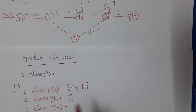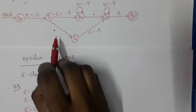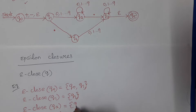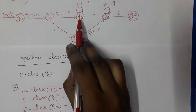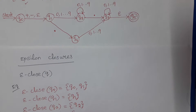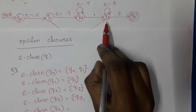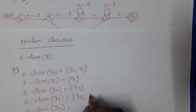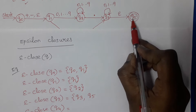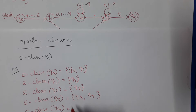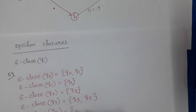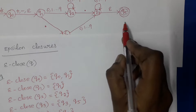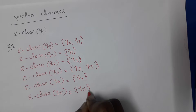E-close of q1: first write q1, then check for epsilon transitions from q1 — there are none. So E-close of q1 is {q1}. E-close of q2: write q2, no epsilon transitions out of q2, so E-close of q2 is {q2}. E-close of q3: write q3, there is an epsilon transition going to q5, so include q5. No further epsilon transitions, so E-close of q3 is {q3, q5}. E-close of q4 is {q4}, and E-close of q5 is {q5}, as there are no epsilon transitions from those states.